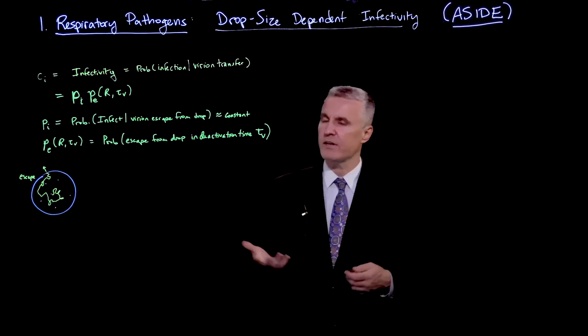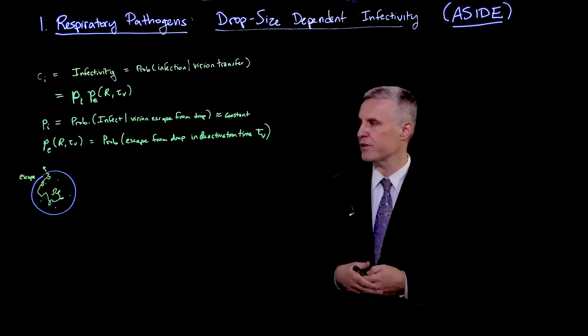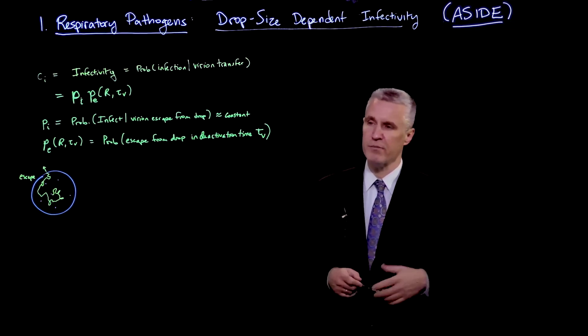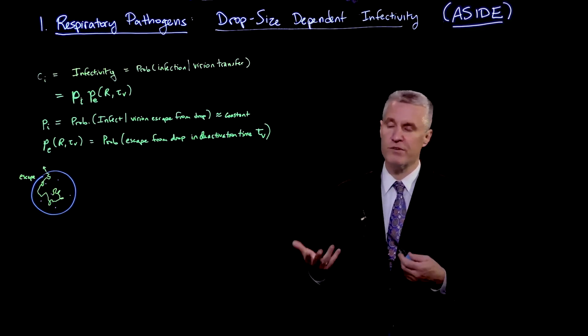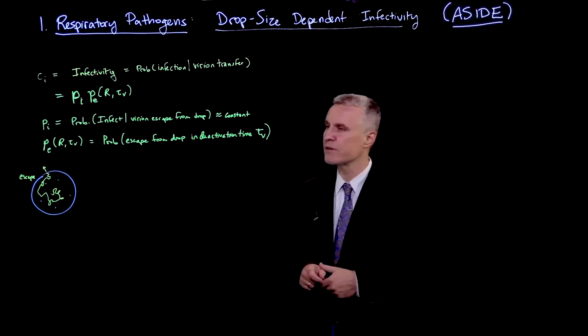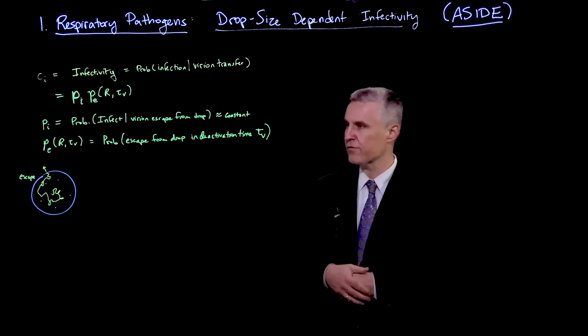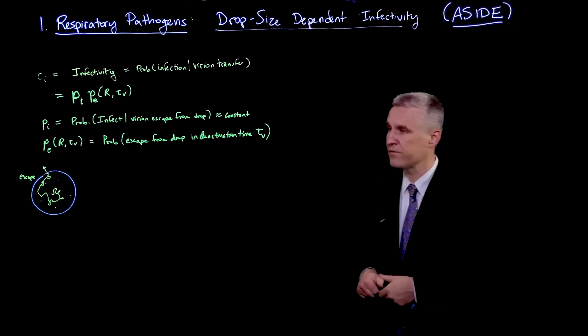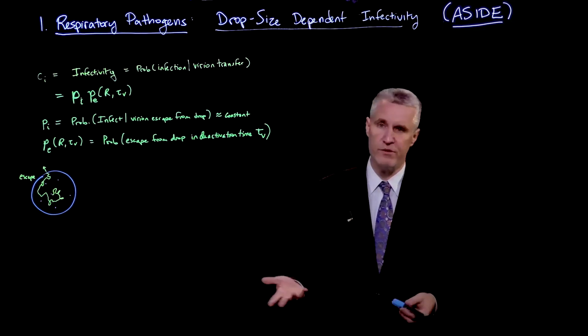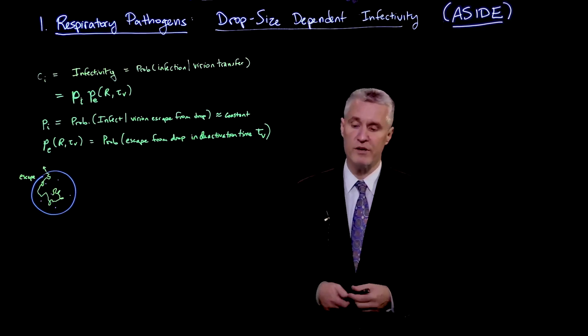In fact, virions are typically found to have a period of deactivation where, after a certain amount of time, they are no longer viable and able to cause further infection. So if we assume there's a certain time τv for the virus deactivation, then we can ask ourselves if the virus has had a chance to escape or not as a function of size.